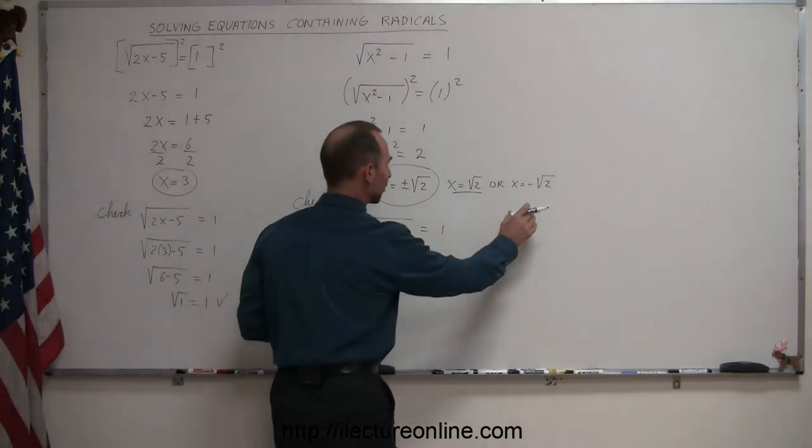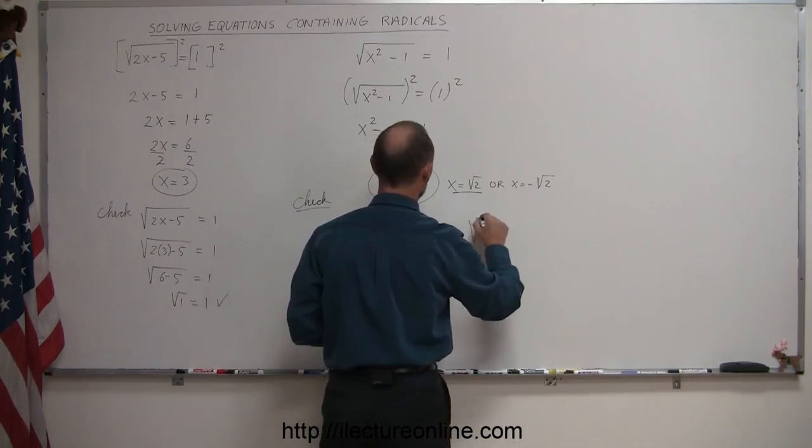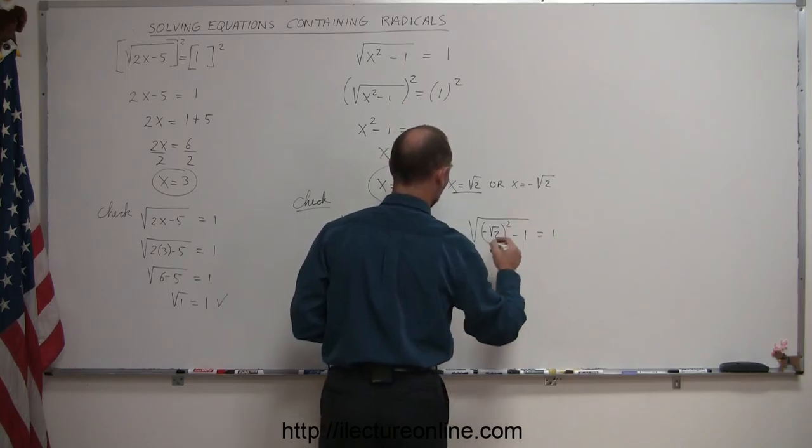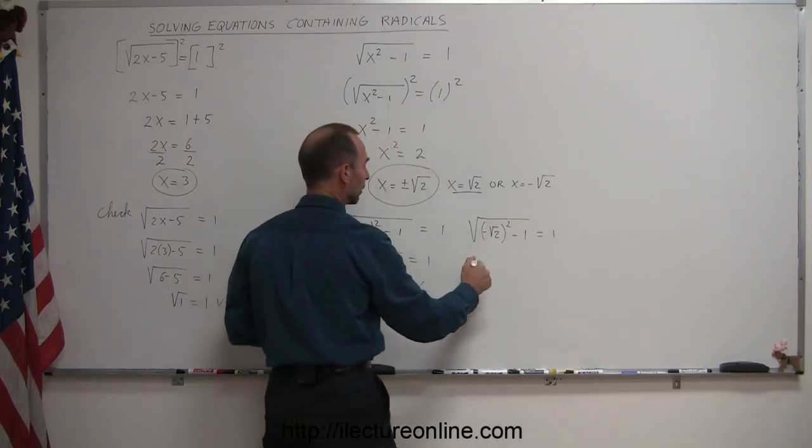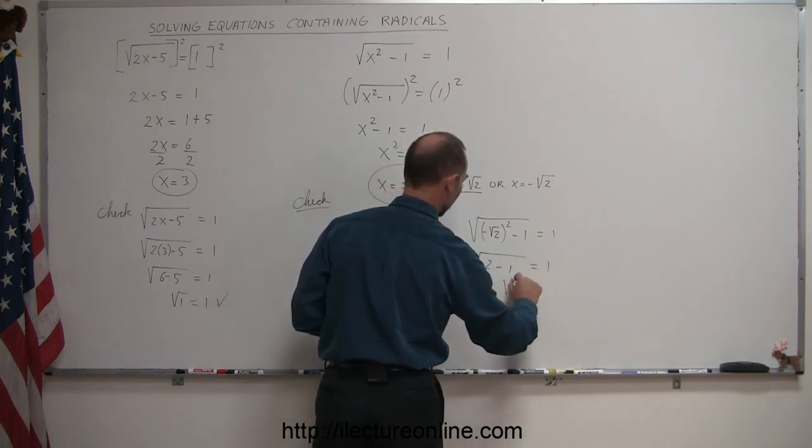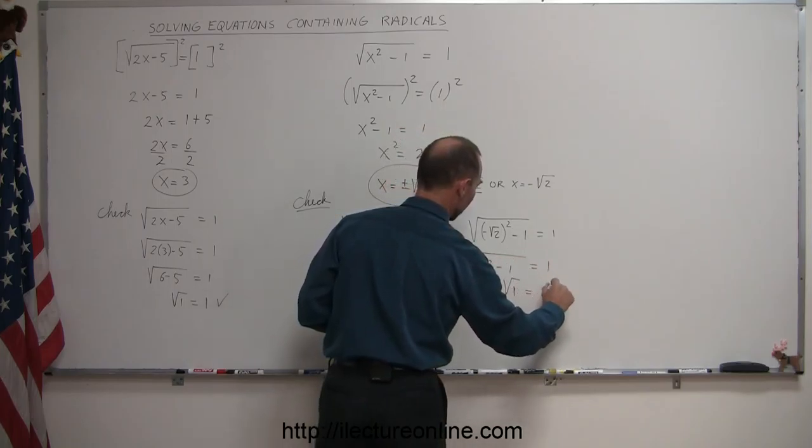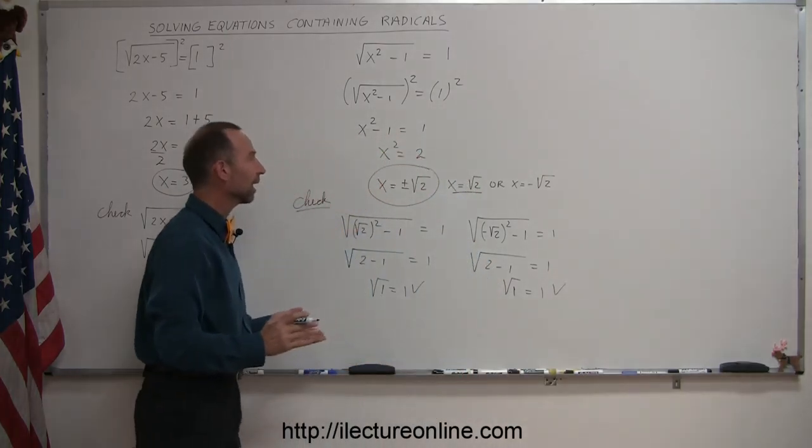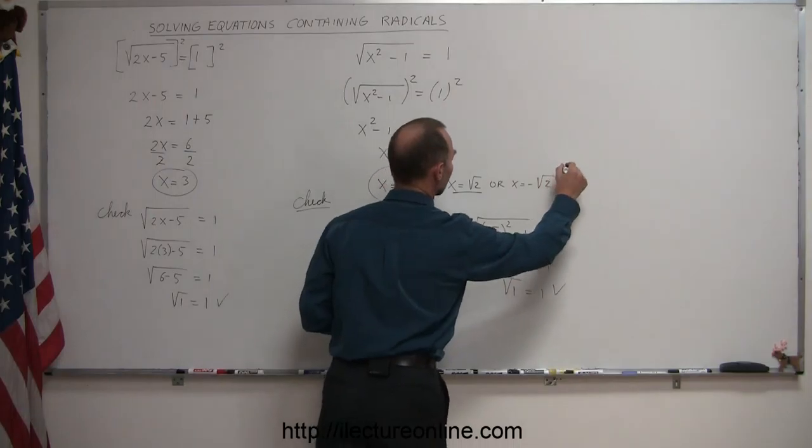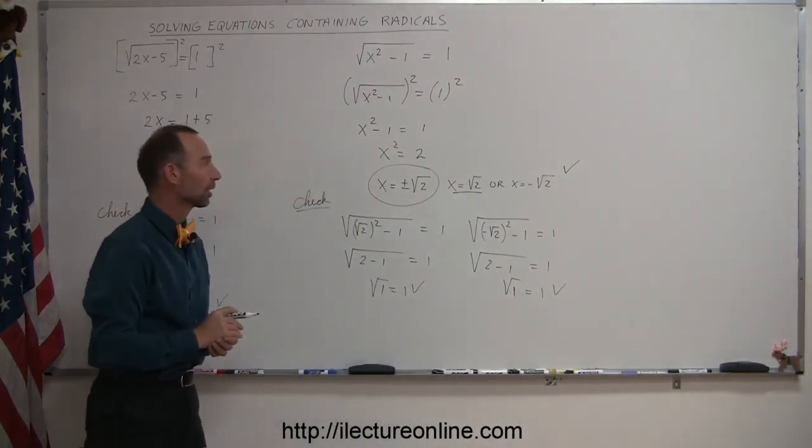If you plug in the negative answer, the square root of negative the square root of 2 quantity squared, minus 1 equals 1, that's another check. Notice, since it's squared, the negative will be negated, so we get the square root of 2 minus 1 equals 1, or the square root of 1 equals 1, and that also checks out. So, you can see that in both cases, both of these answers are admissible, so we found the two answers for that particular equation.